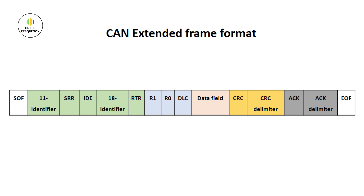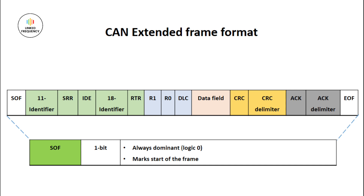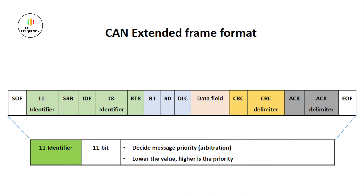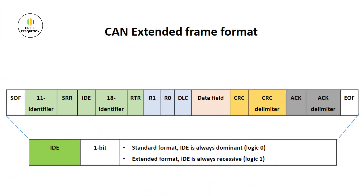Starting with SOF — a single dominant bit marking the start of a message. The 11-bit identifier decides message priority; lower the value, higher is the priority. Next is SRR — Substitute Remote Request — which is 1 bit recessive. This bit replaces the RTR bit of the standard CAN message frame. IDE is 1 bit; in standard format the IDE value is dominant, and in extended format it is always recessive.